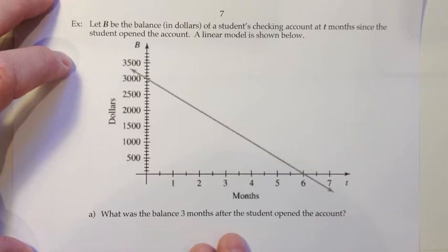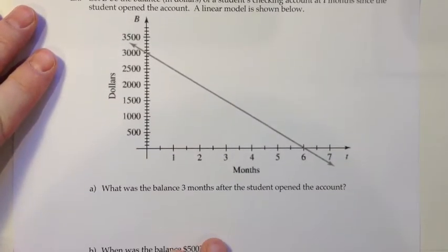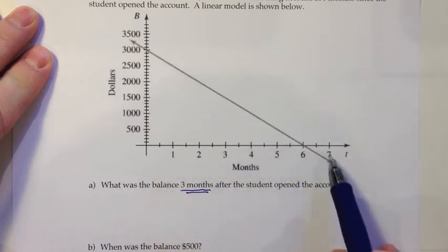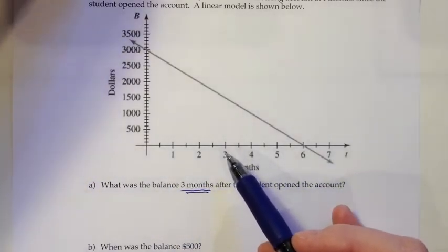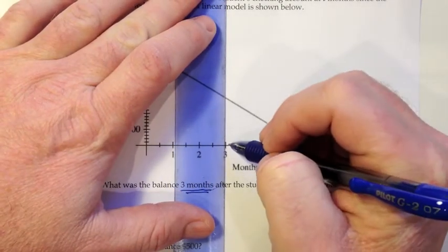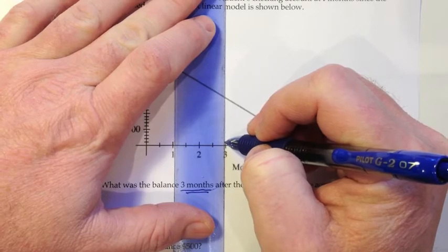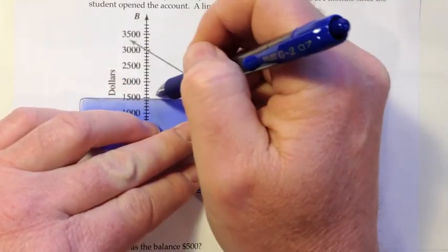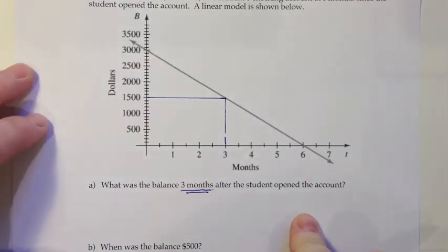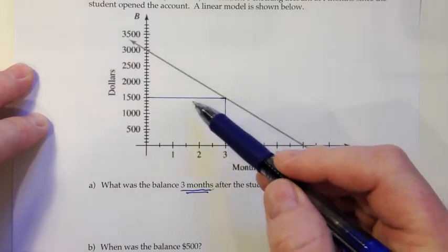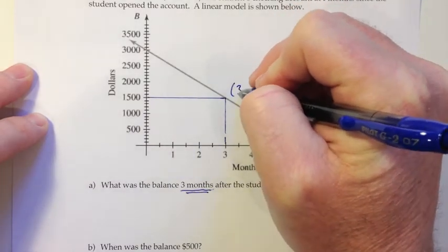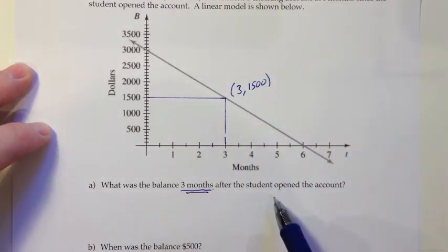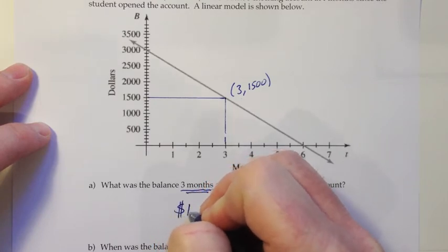The first one is, what was the balance three months after the student opened the account? So what we'd want to do there is three months is a time. So we want to go onto the time axis and find that three. And just like we did with the x and the y-graph on the previous page, we want to try and figure out what this ordered pair is. Since this graph doesn't have the grid lines that the other one did, I'm using a straight edge to help draw a little bit better lines of what's going on. And it appears that when t is 3, the balance in the account is about $1,500. We could represent that as an ordered pair here if we wanted. So what is the balance three months after the student opened the account? It appears that it would be $1,500.